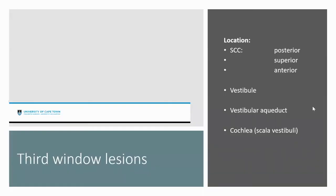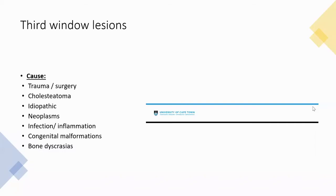Third window lesions can be differentiated by location or cause. By location, they can sit at the semicircular canals — posterior, superior, and anterior — in the vestibule near the vestibular aqueduct, or into the cochlea, specifically the scala vestibuli. Categorizing by cause is straightforward using the DIMPACT acronym: trauma, surgery, cholesteatoma, idiopathic, neoplasms eroding bone, previous infections, inflammation, congenital malformations, and bony dysplasias.